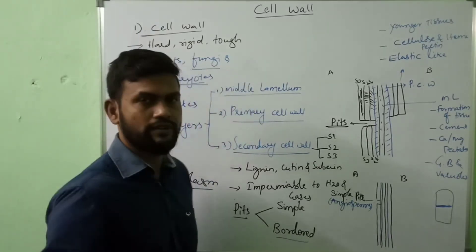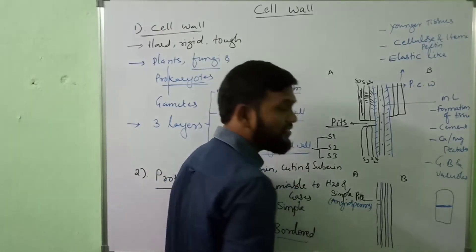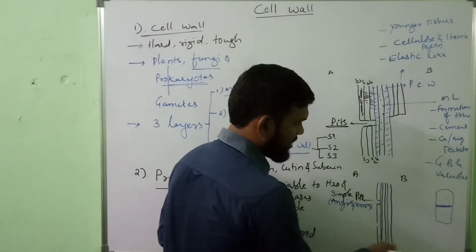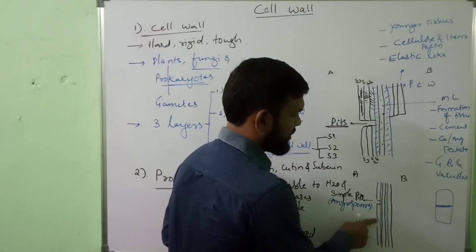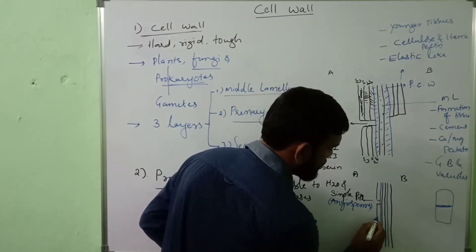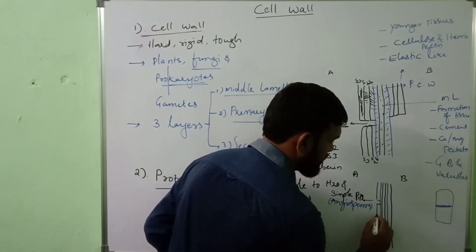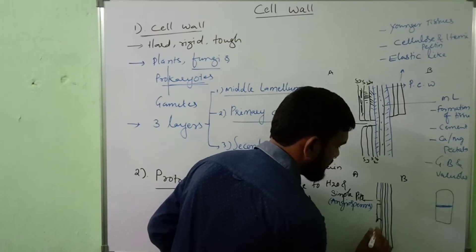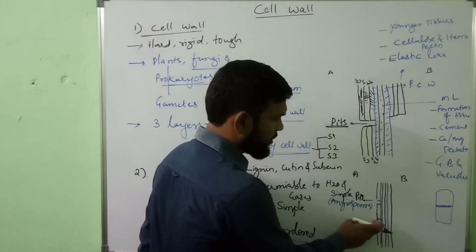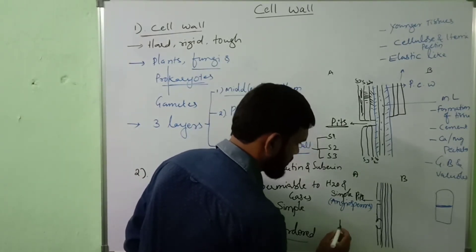In border pits, lignin, cutin, and suberin are unevenly deposited. The secondary cell wall is uneven — they are crescent-shaped — the starting point is narrow and the base is broad.